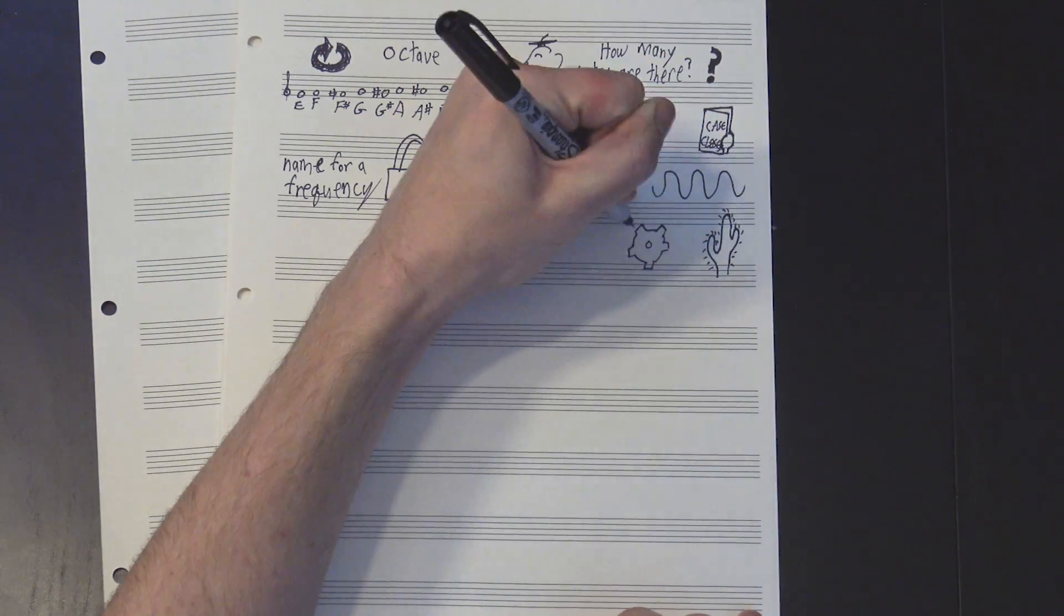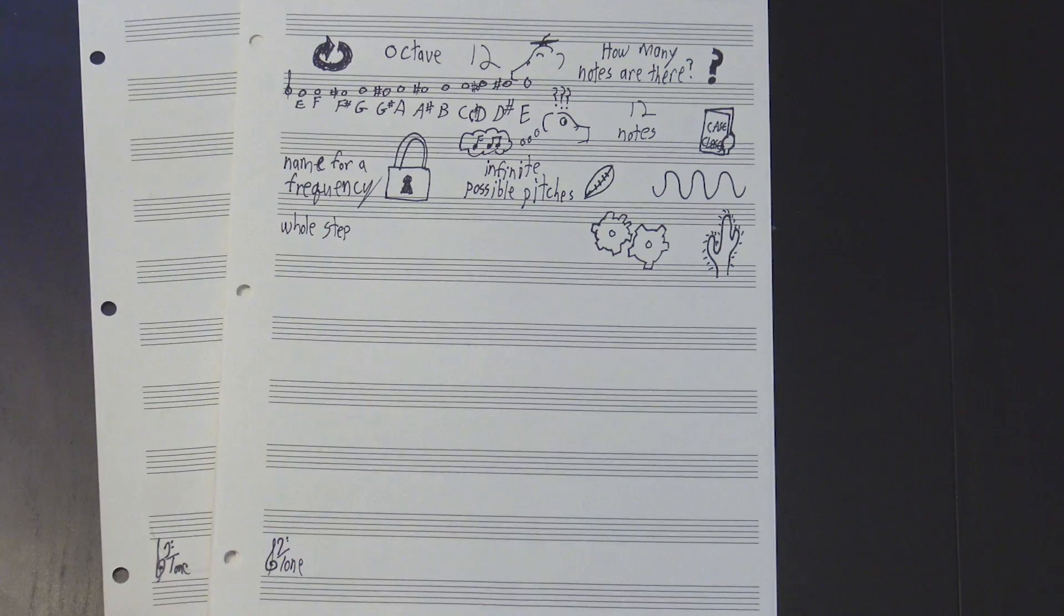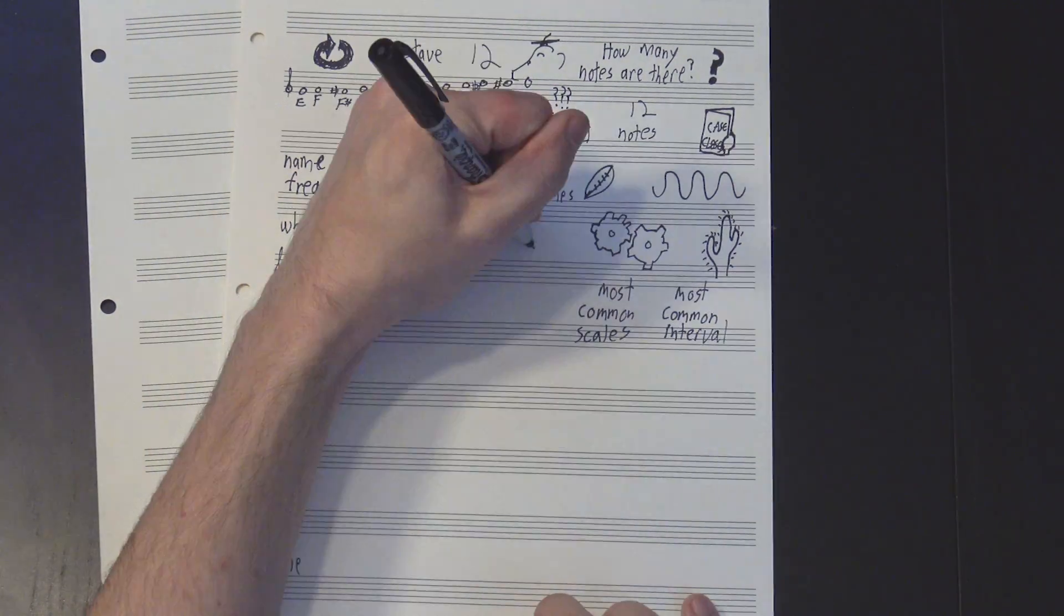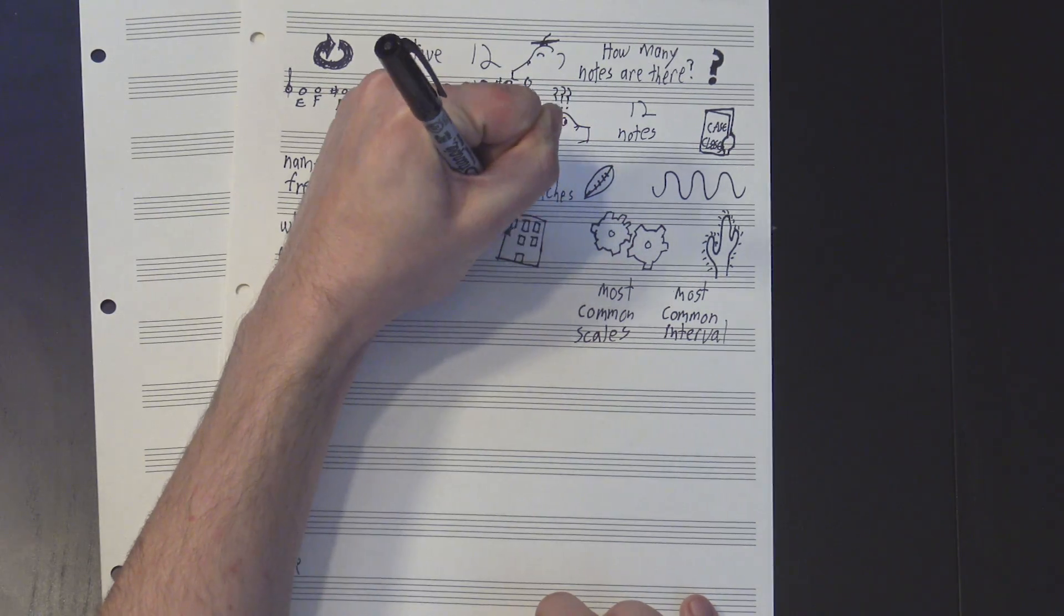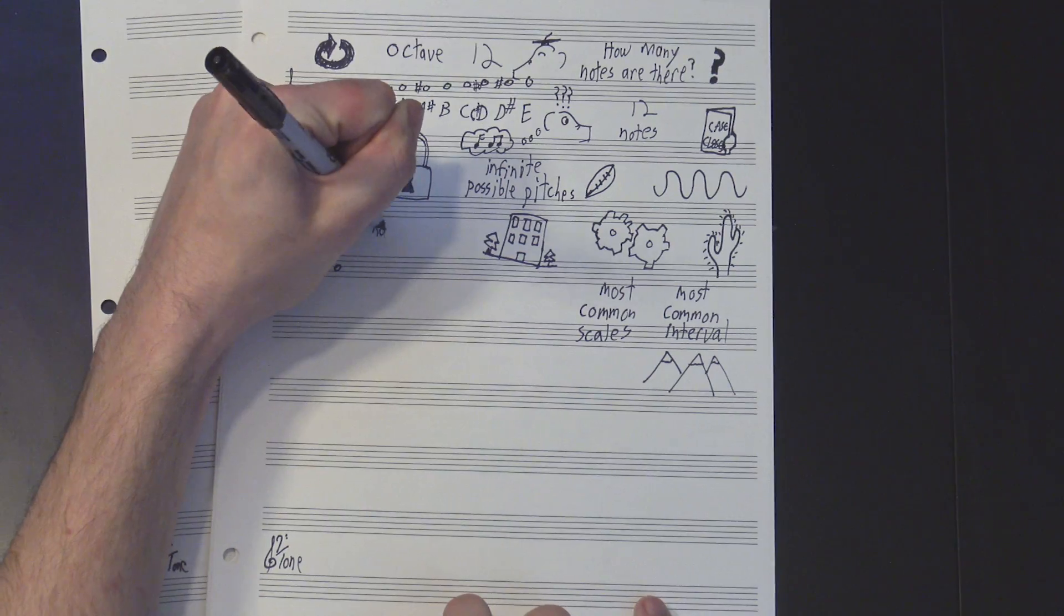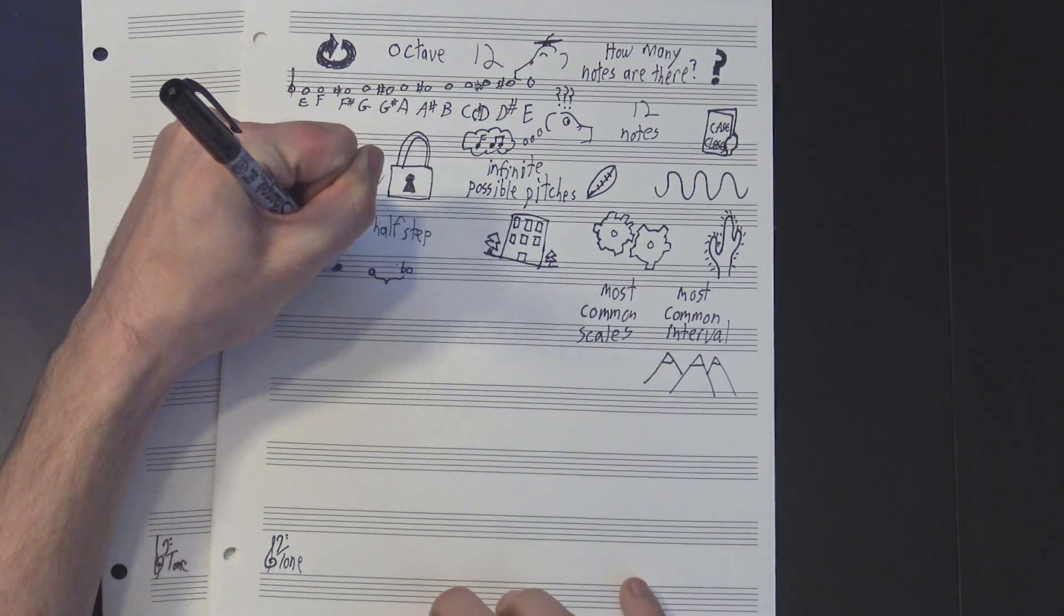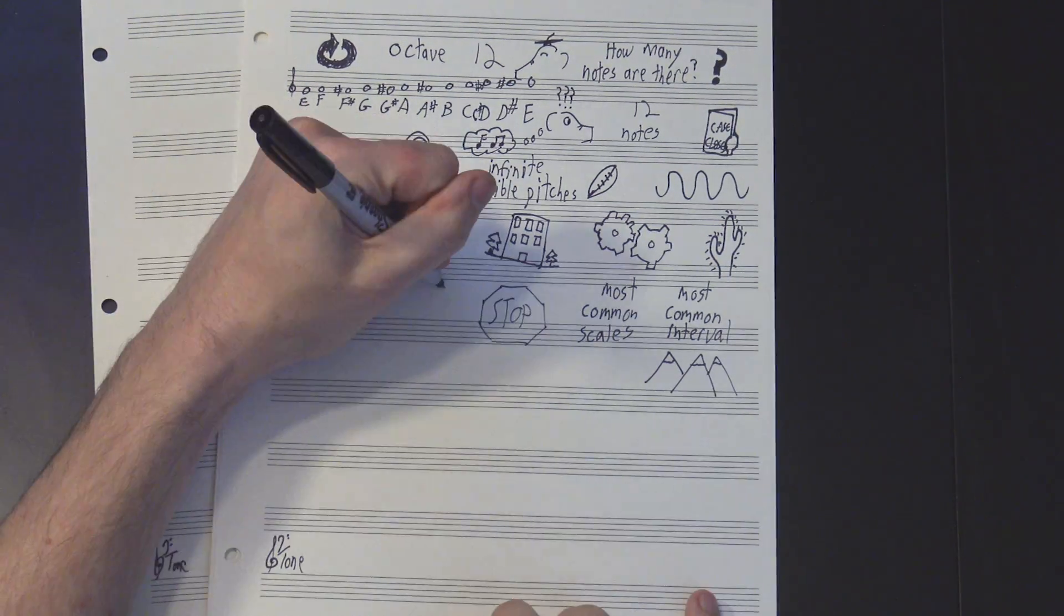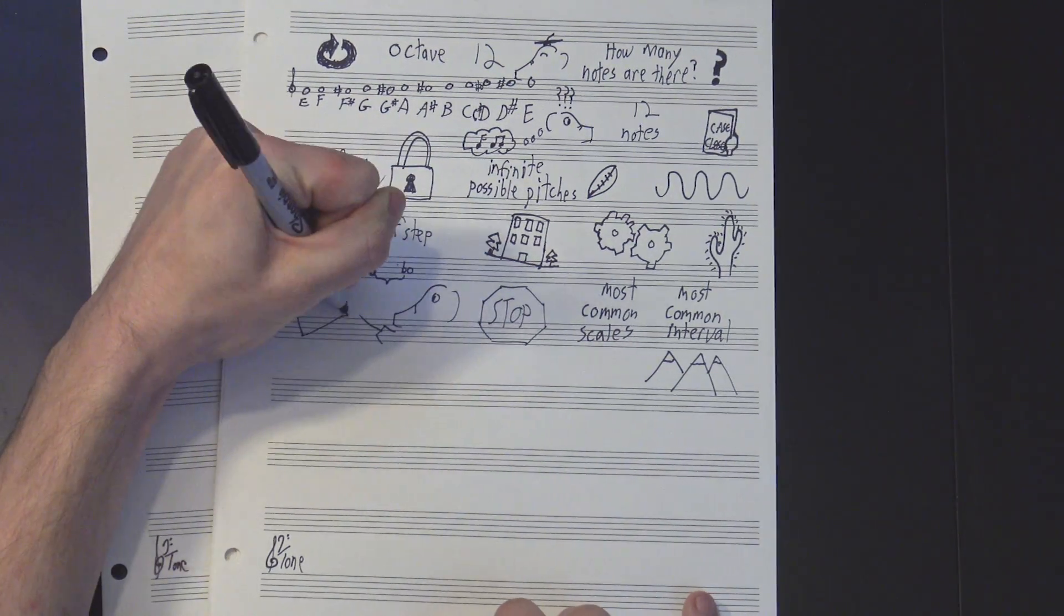In western music, one of the most fundamental distances between notes is the whole step. It's the most common interval in many of our most common scales, and it provides the basic structure on top of which our modern understanding of sound is built. But it's also pretty big, so we usually add in the half step, which, as you can imagine, is half as wide. And that's where we usually stop. Between the two of these, we can explain basically everything about normal western music.